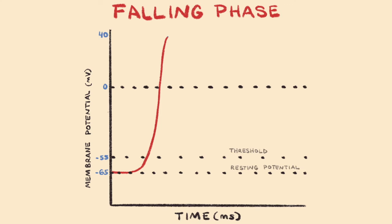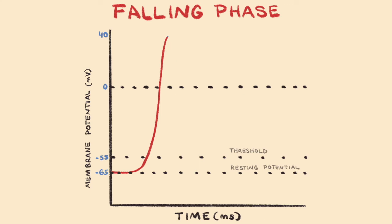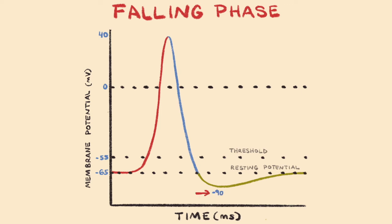The falling phase of the action potential, corresponding with repolarization, involves the neuron going back towards a resting membrane potential. During this phase, the membrane potential becomes increasingly less positive in charge, descending down, passing 0 millivolts, and then becoming increasingly negative, heading towards a charge of negative 90 millivolts.